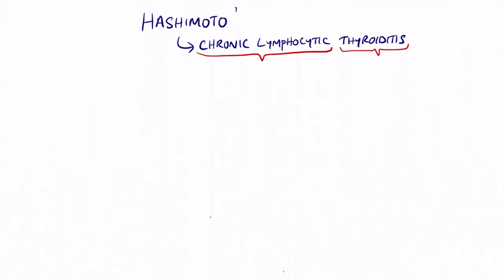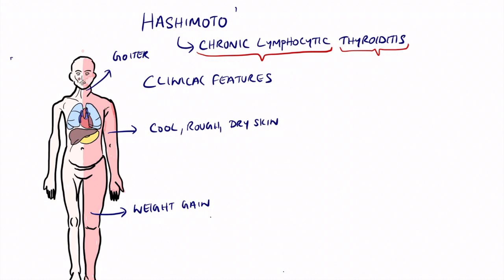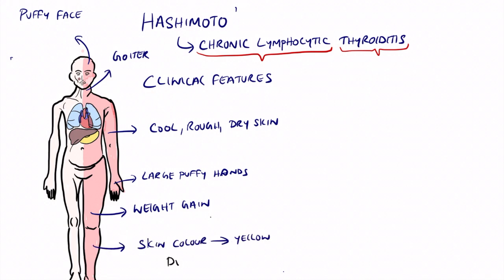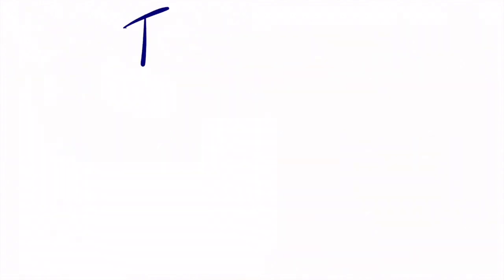The most common symptoms in Hashimoto's include diffuse goiter with diffuse enlargement, weight gain, cool, rough, dry skin, puffy face, and large puffy hands due to edema. Skin color changes can occur — patients may turn yellow due to reduced conversion of keratin into vitamin A. On histological slides, you can see an enlarged thyroid gland, lymphocytic infiltration on H&E staining, and Hürthle cells.